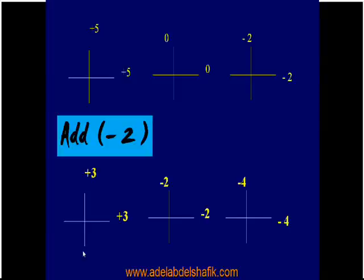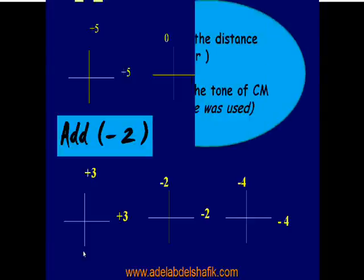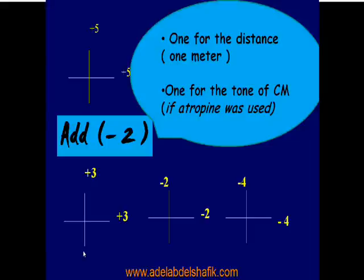We let the patient sit in front of the chart and start to put lenses of these powers, increasing or reducing a little bit until we reach the best vision the patient can achieve. The minus two is composed of: minus one for the working distance of one meter, and another minus one for the tone of the ciliary muscle if atropine was used during the examination.